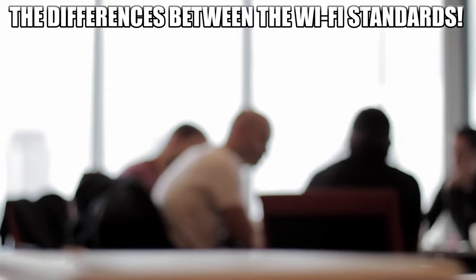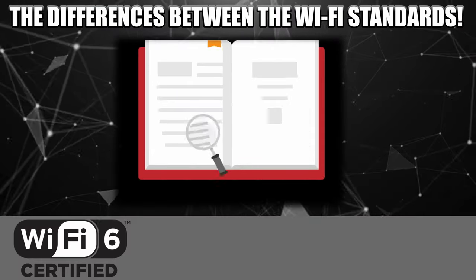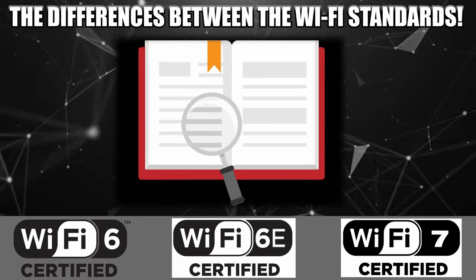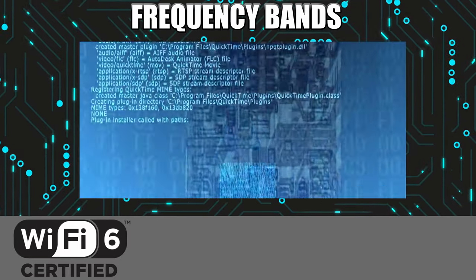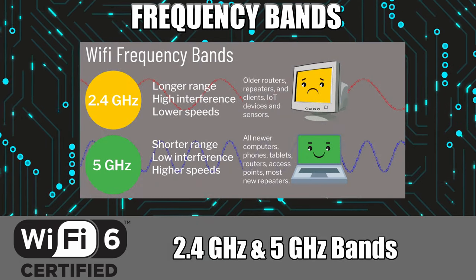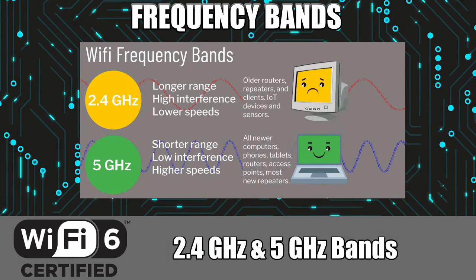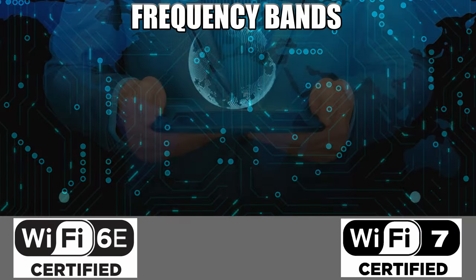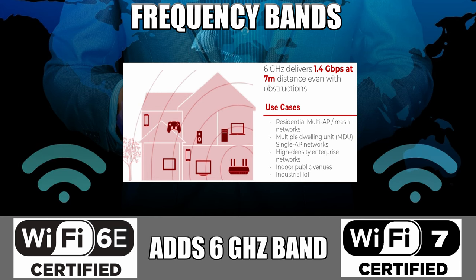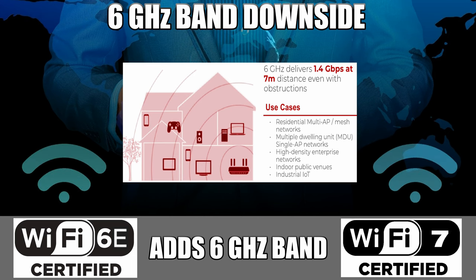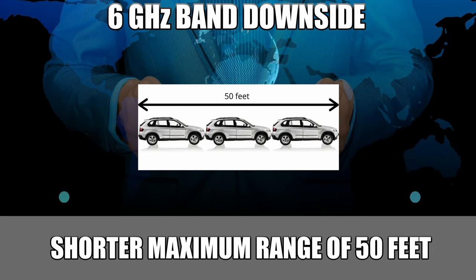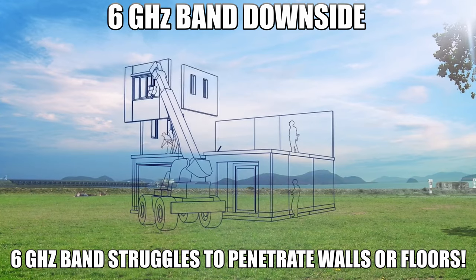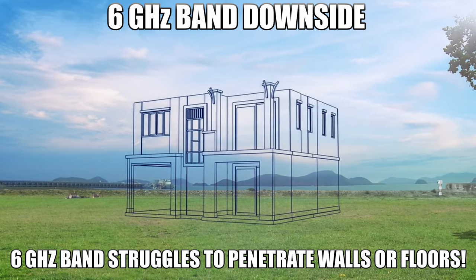First, let's talk about the differences between Wi-Fi 6, Wi-Fi 6E, and Wi-Fi 7 — starting with frequency bands. Wi-Fi 6 operates in the 2.4 and 5 gigahertz bands, while Wi-Fi 6E and Wi-Fi 7 add support for the faster 6 gigahertz band. The only downside to the 6 gigahertz band is its shorter maximum range of 50 feet, and these higher frequencies have a tougher time penetrating solid walls and floors.